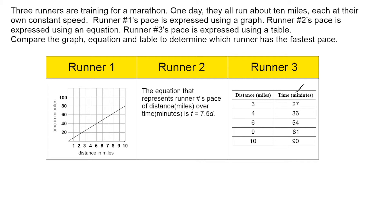Now one of their paces is shown as a graph, another runner's pace is shown as an equation, and another runner's pace is shown as a table. So what we're going to do to compare the three rates is to express each rate as a unit rate.